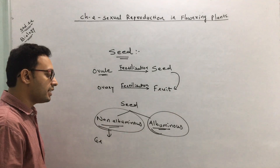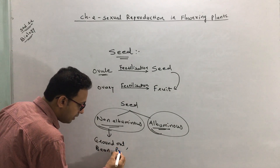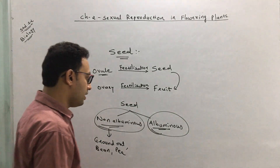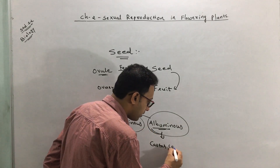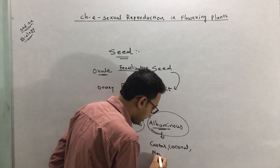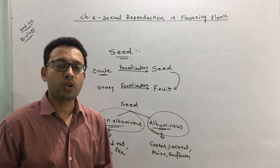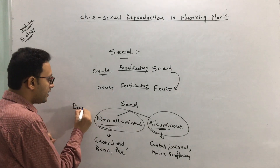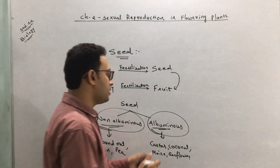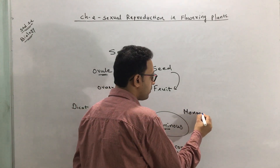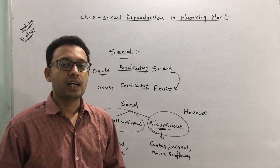Examples of non-albuminous seeds, where the food is fully consumed and no reserve food material is left, include groundnut and pea. Examples of albuminous seeds, where some food remains in the endosperm, include castor, coconut, maize, and sunflower. Generally, dicot seeds are non-albuminous and monocot seeds are albuminous.